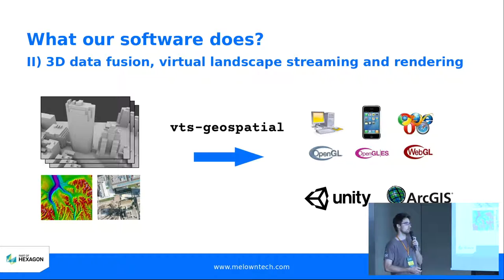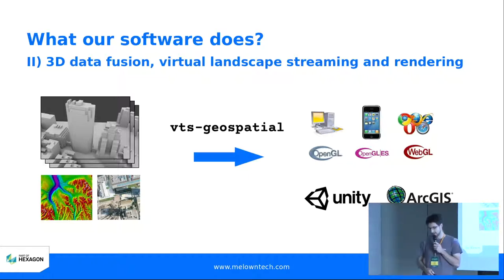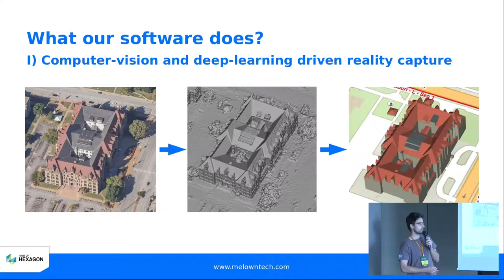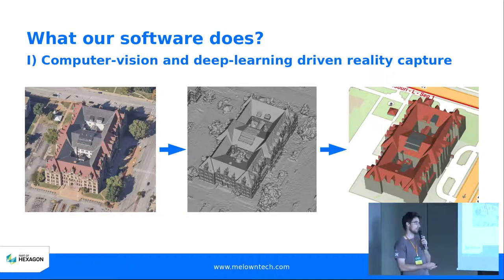We have a WebGL-based JavaScript web client, a C++ client for desktop, and also a very nice plugin for Unity which is gaining some speed lately. That's basically VTS Geospatial. With just a short stop on the buildings — we'll probably implement some very interesting new format to basically stream semantic buildings to the front end, which is the direction we are going.